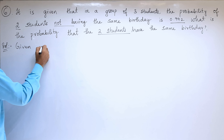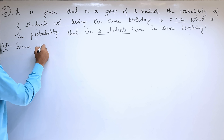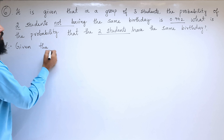Sixth problem. It is given that in a group of three students, the probability of two students not having the same birthday is 0.992. So, what is the probability that the two students are having the same birthday? We need to find out the probability that the two students are having the same birthday.